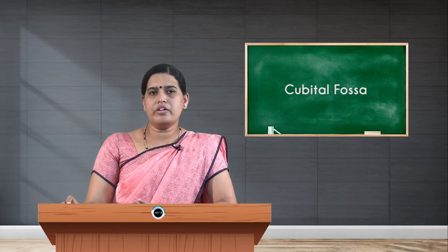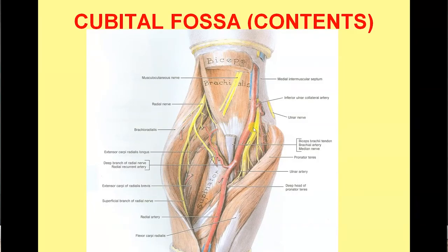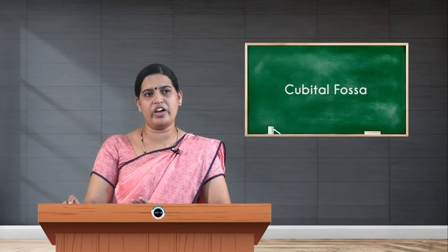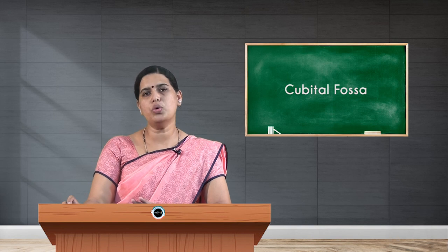Showing the contents from medial to lateral: the median nerve is the medial-most structure, then the brachial artery with its terminal branches — the radial artery and the larger ulnar artery — then the tendon of biceps brachii, and the lateral-most content is the radial nerve with its two terminal branches: the superficial branch of the radial nerve, which becomes cutaneous, and the deep branch — also called the posterior interosseous nerve — which pierces the supinator muscle (the floor of the cubital fossa) to enter the posterior compartment of the forearm and supply the muscles there.